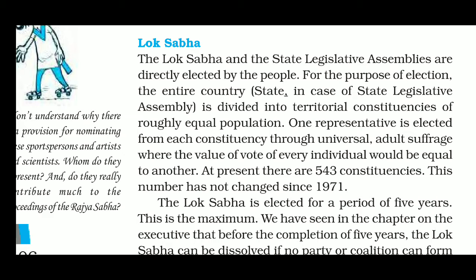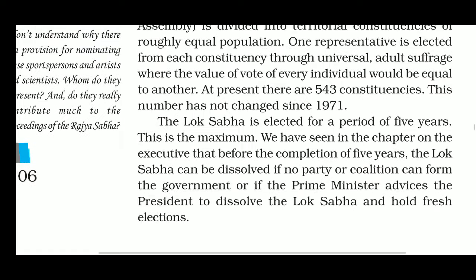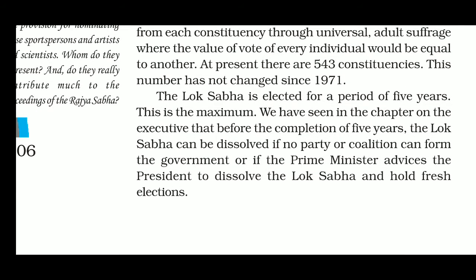One representative is elected from each constituency through universal adult suffrage, where the value of the vote for every individual is equal. At present there are 543 constituencies, and this number has not changed since 1971. The Lok Sabha is elected for a period of five years — this is the maximum term.